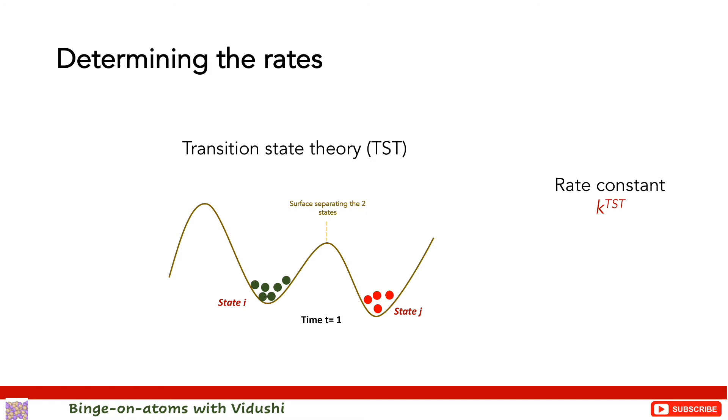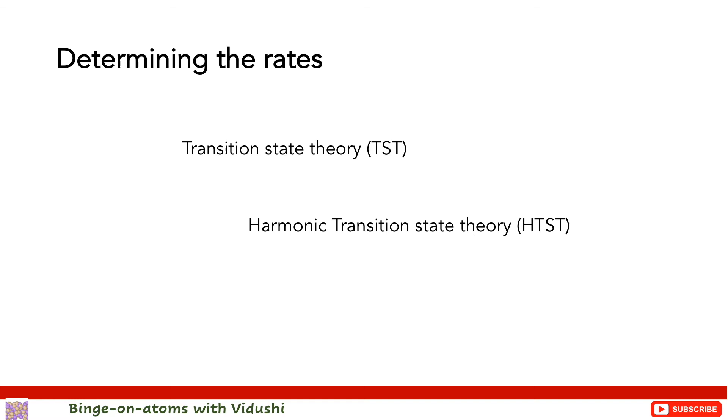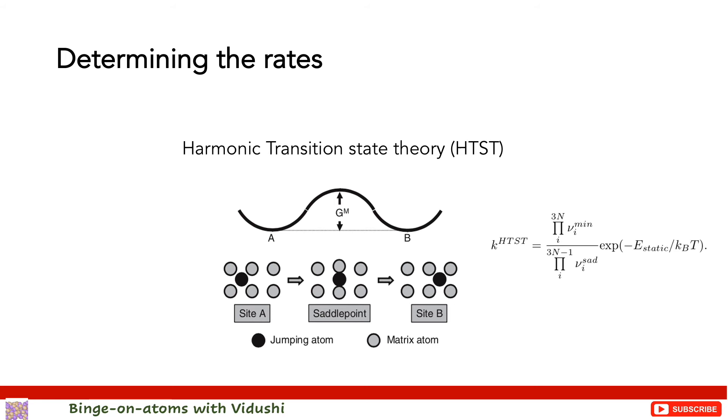Now there are many implicit assumptions associated with TST. TST provides a simple expression for rate constants, but in most KMCs harmonic approximation of TST is applied, which is also referred to as Vineyard theory. I have previously given a brief description of this in my video on how to choose a method to study atomistic diffusion. I will share that link in the description section below. Harmonic transition state theory is characterized by two main informations: first, a saddle point which is the top of the energy barrier and is also referred to as a ridge top.